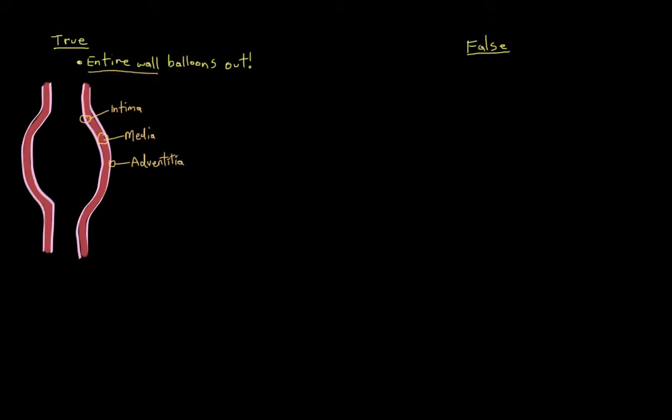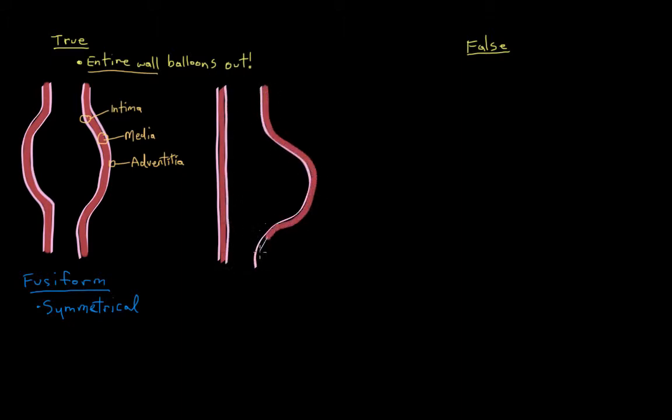True aneurysms can also be subdivided even further. So true aneurysms that are symmetrical are called fusiform aneurysms. Fusiform just means spindle-shaped, and that's sort of like the one I just drew. These ones are uniform in shape. But you can also get true aneurysms that are saccular, which means that only one side of their wall has become dilated.